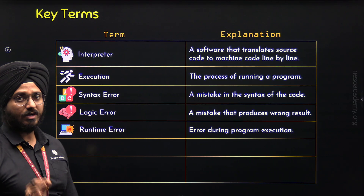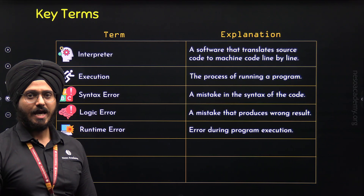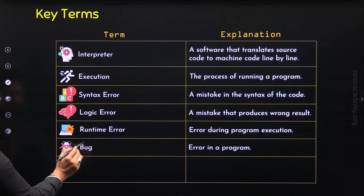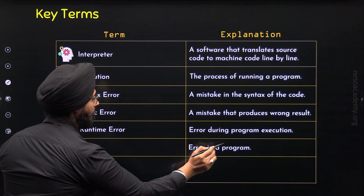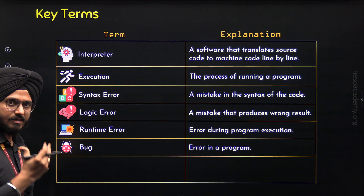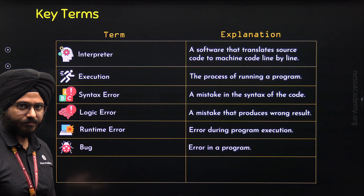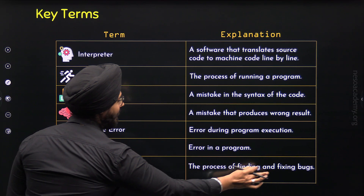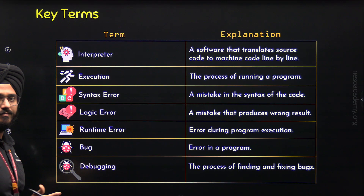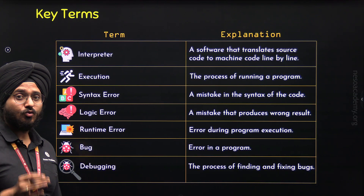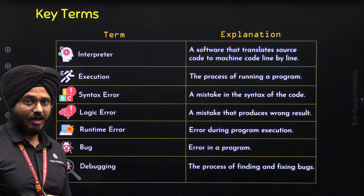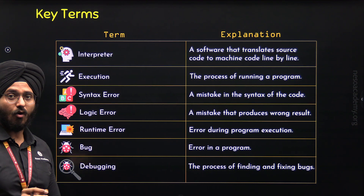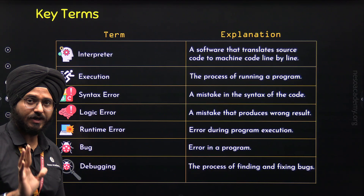Now let's move to the eleventh term: Bug. Bug refers to an error in a program — it is simply an error in a program. And Debugging refers to the process of finding and fixing bugs. So the process of finding and fixing a bug in a program is what we call Debugging.